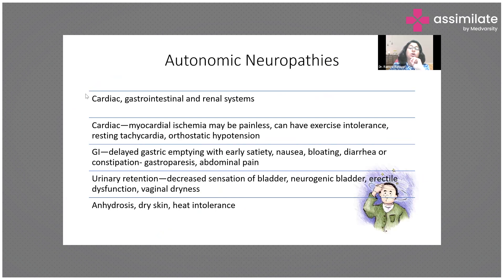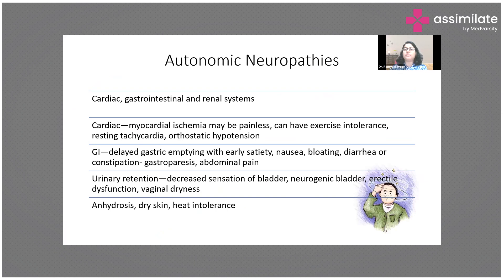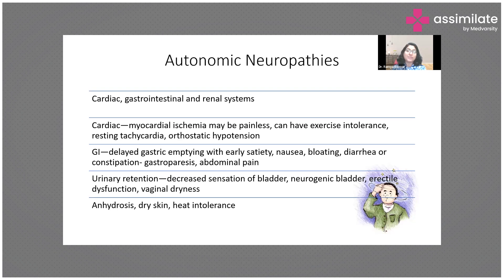Autonomic neuropathy can affect various systems. Cardiac involvement can cause silent myocardial ischemia — the patient feels no chest pain, so heart attacks go unnoticed. Diabetic patients can present suddenly with a massive heart attack because angina goes undetected. Patients can also have exercise intolerance, resting tachycardia, and orthostatic hypotension causing recurrent syncopal attacks — which can be mistakenly attributed to hypoglycemia.